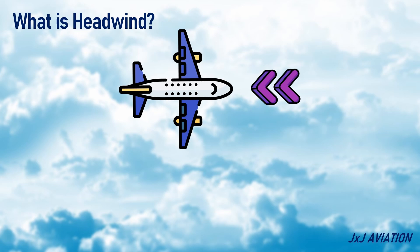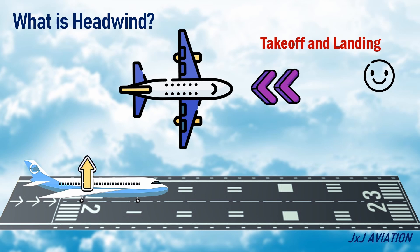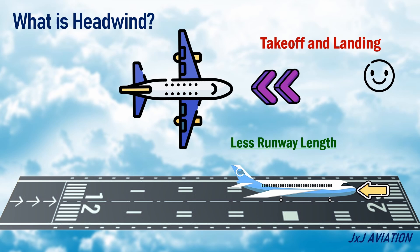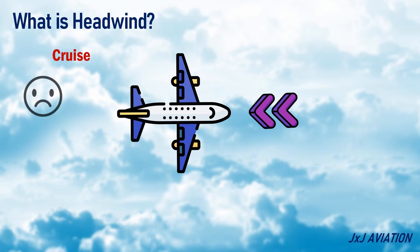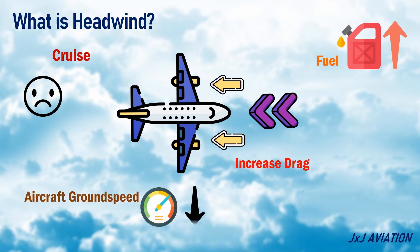Headwinds are beneficial during take-off or landing phases of flight. During take-off, the wings generate more lift because of the headwinds, which means less runway length is required for take-off. During landing, headwinds increase the drag on the aircraft, which again means less runway length is required to slow down the aircraft to a safe speed. Headwinds are not beneficial in the cruise phase since they will increase the drag acting on the aircraft, which will increase the fuel burn. Headwinds also result in reduced ground speed, which increases the flight time.